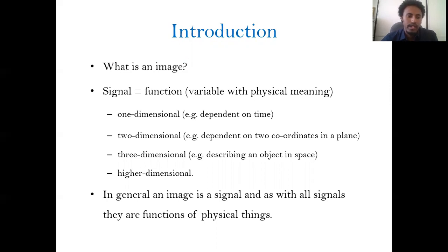There are different kinds of signals. You know one-dimensional signals, which are dependent on time. There are also two-dimensional signals, which are dependent on spatial coordinates — we call them 2D images. We also have three-dimensional signals: when you describe an object in space, you will have three dimensions — one x, one y, and one z.